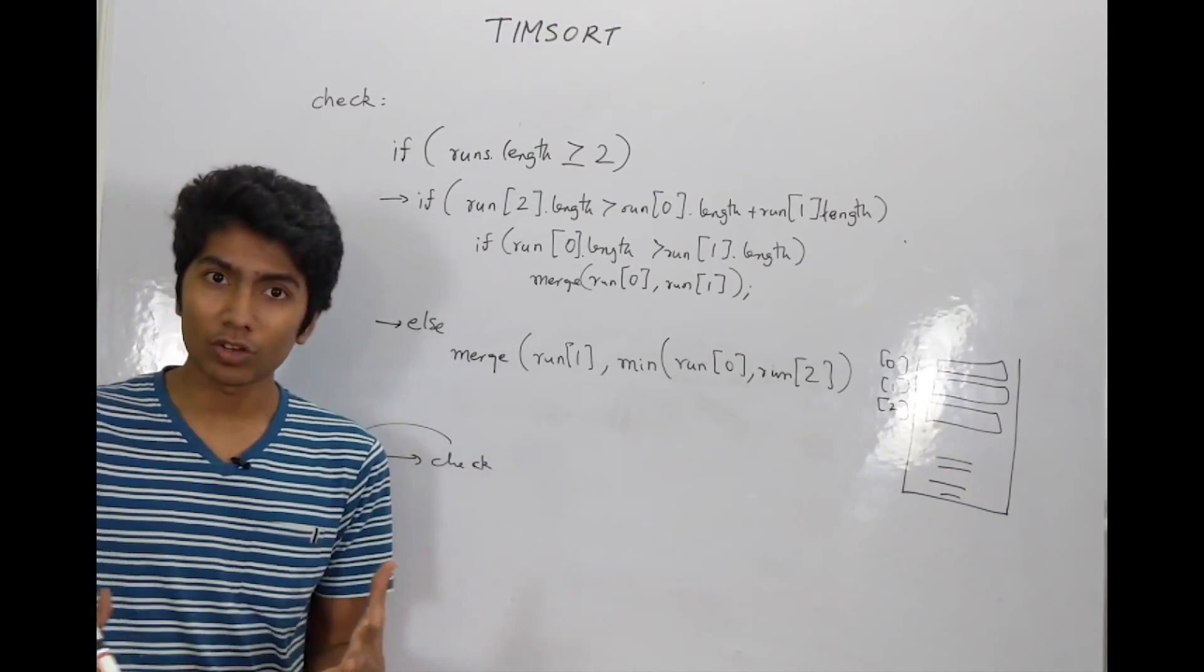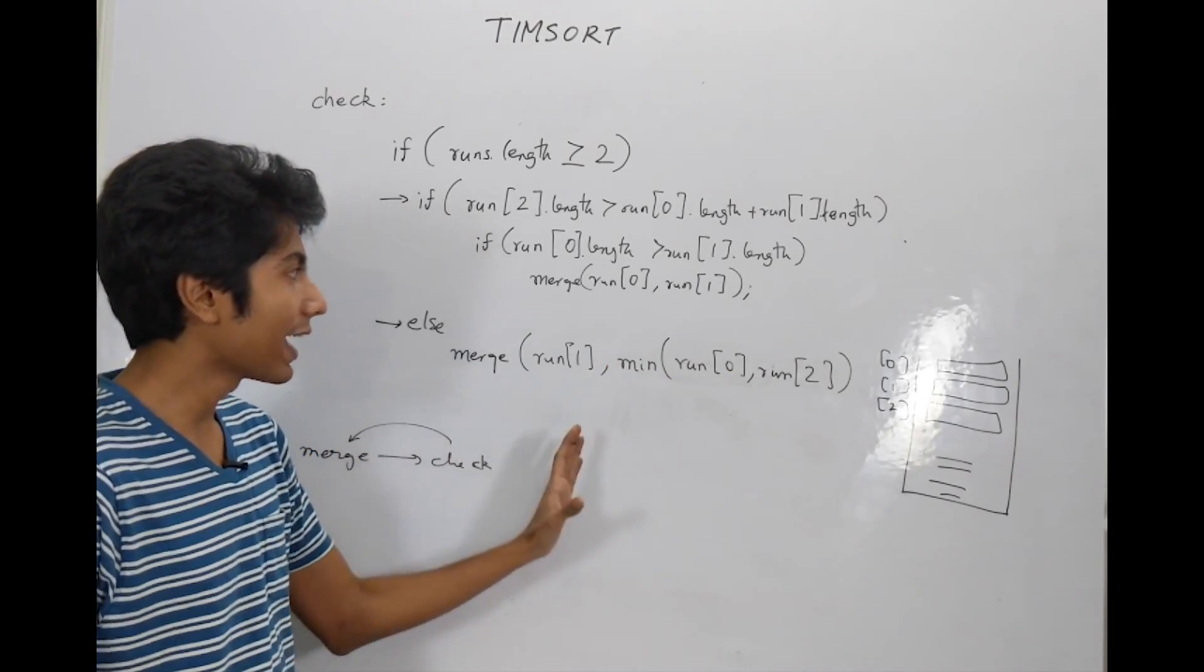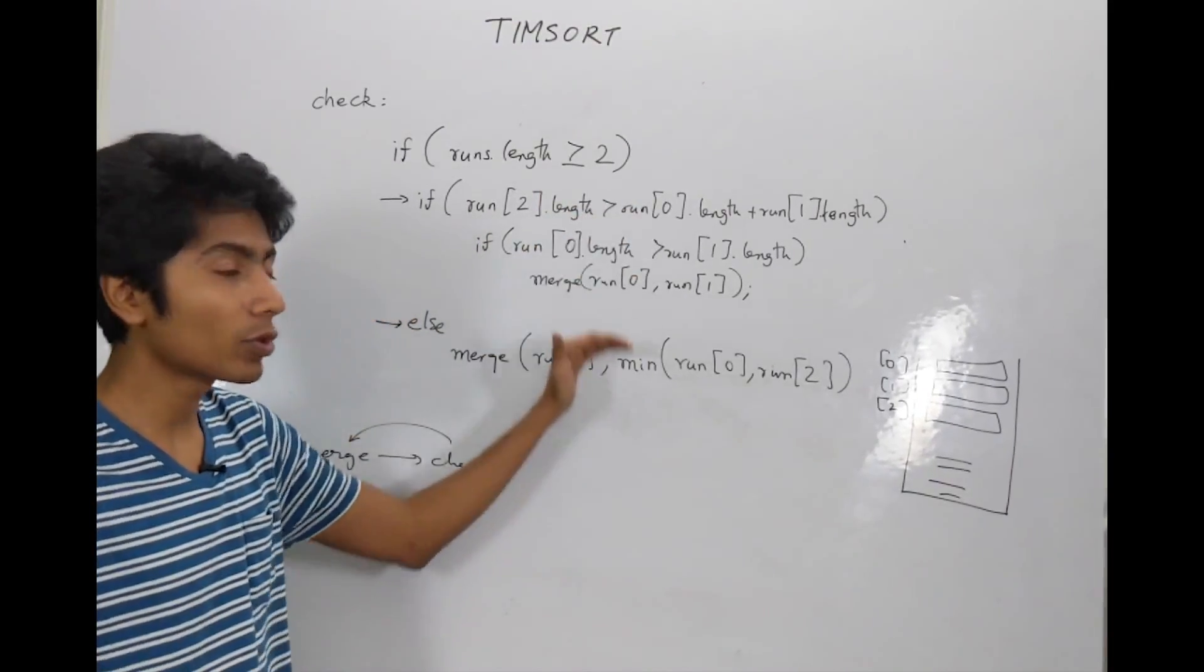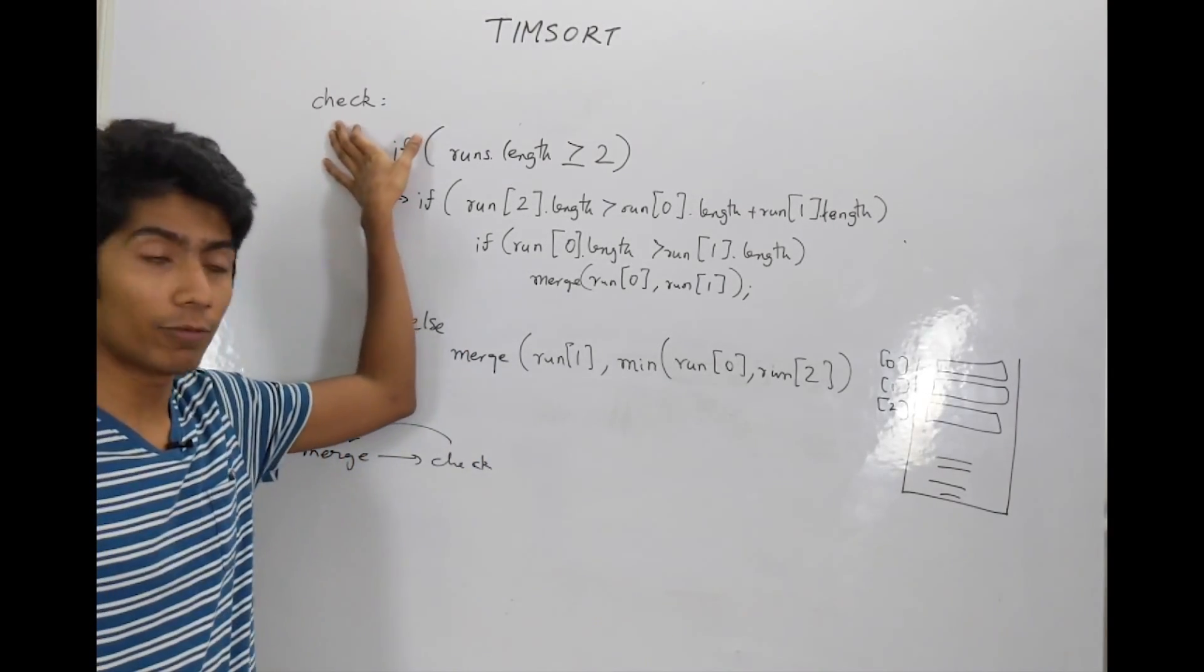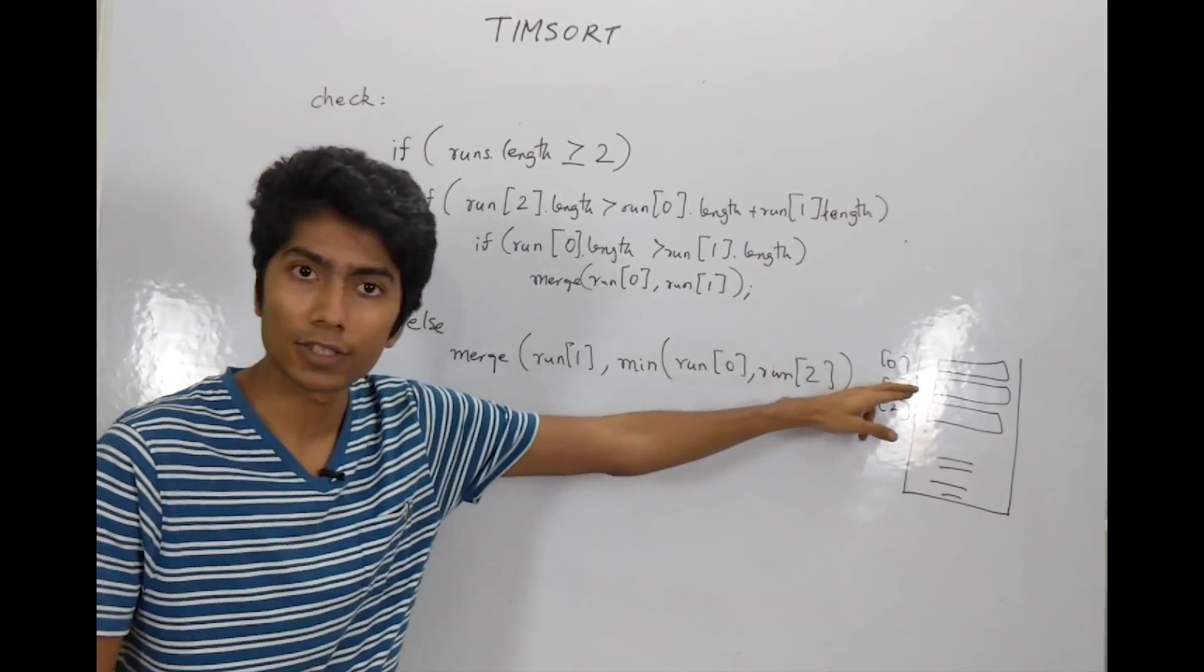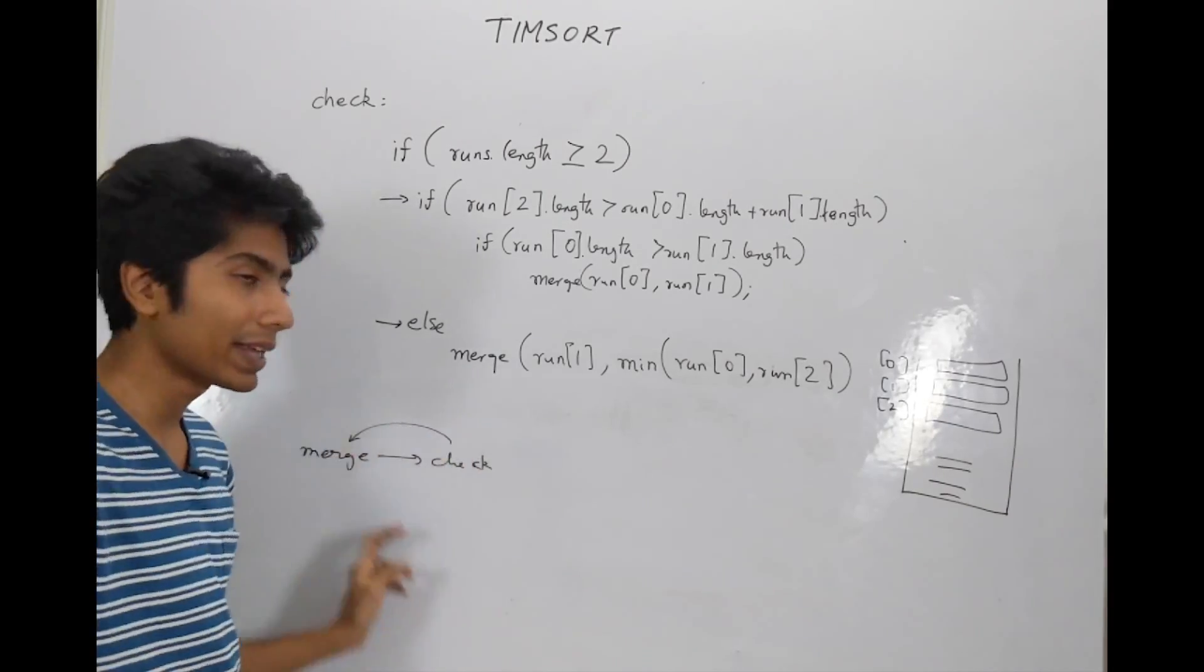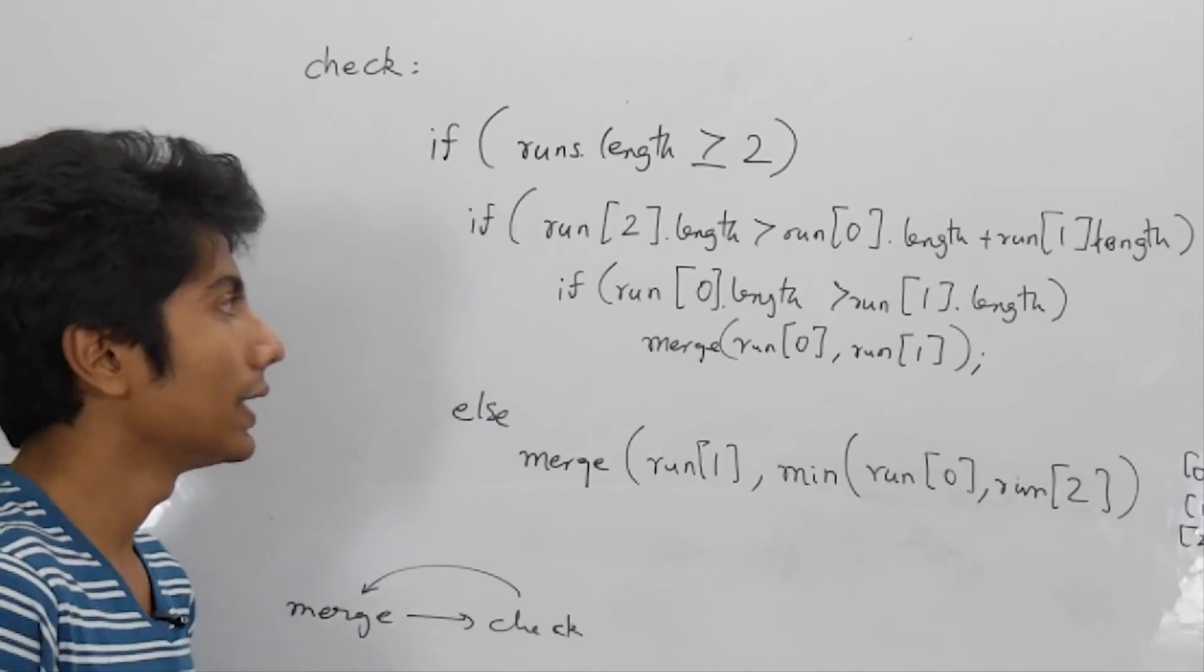So till now if you found the stack algorithm very confusing, there's some code to explain it in a good way. What we have here is every time that the stack is filled, some invariants have to be satisfied. And so the stack checks itself. And every time it checks itself, if it needs to do some sort of operation, which is the merge operation, merging two runs, then it again checks itself after that merge. So this keeps happening in a loop till the invariants are all satisfied.